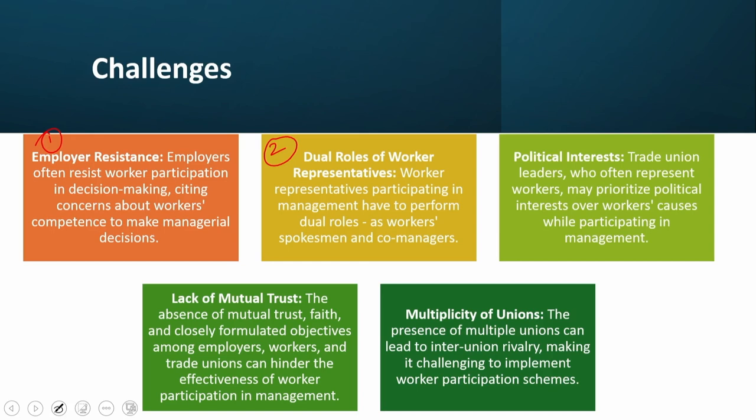There might be certain political interests as other challenges. Trade union leaders who often represent workers may prioritize political interests over workers' causes while participating in management. In India, political affiliation of trade unions has actually hampered the growth of worker interest, with political masters often dictating the show. The lack of mutual trust was another reason — the absence of mutual trust and faith can create a distrust loop as people reciprocate distrust in a vicious cycle.